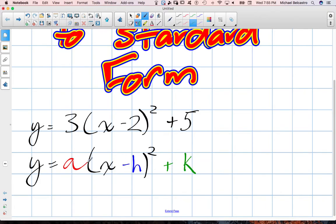You can use any letters you really want, just the idea is that when they're arranged in this fashion, the H and K value tell you the X and Y coordinates of the vertex.